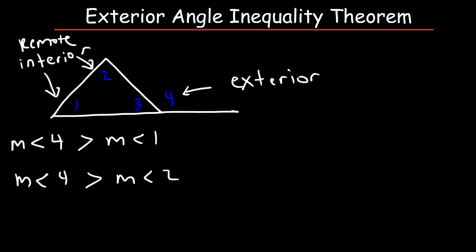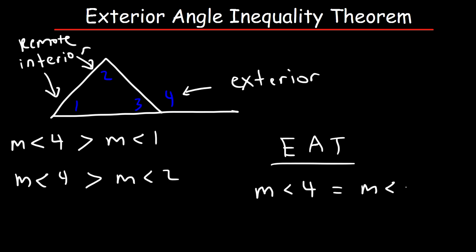That's the exterior angle inequality theorem. The exterior angle theorem — which I'm going to call EAT — states that the exterior angle, which is angle 4, is the sum of the remote interior angles, which is the measure of angle 1 and angle 2. So that's the exterior angle theorem.